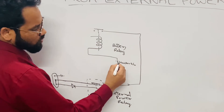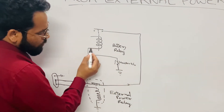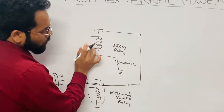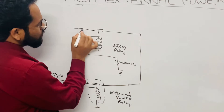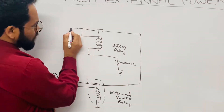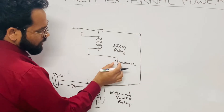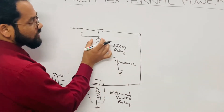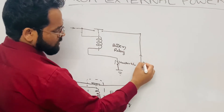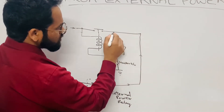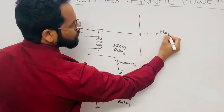This coil will get energized by means of a path which is connected to ground by means of a switch called the master switch, which is located in the cockpit. When this switch is closed, this coil will be connected to the grounding path. For this coil to be energized, supply should come from this point — these two points are connected together. If that supply comes it will go to this coil path and the coil will be energized, provided this master switch is closed.